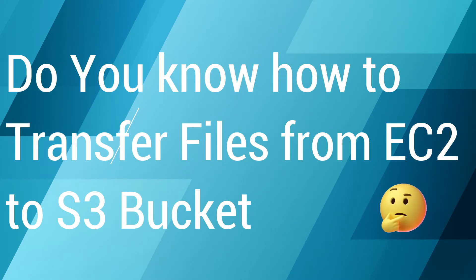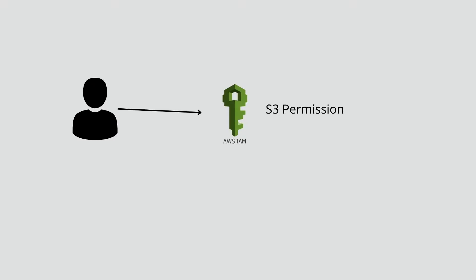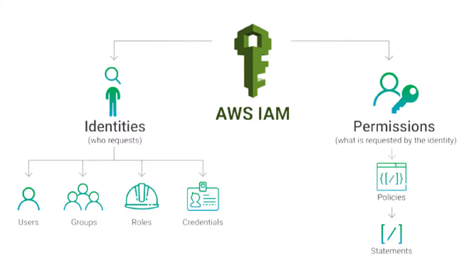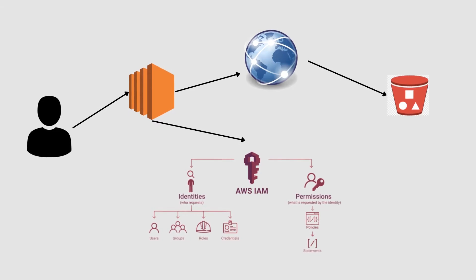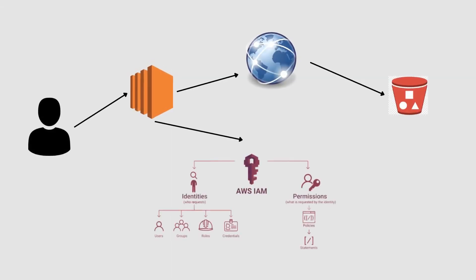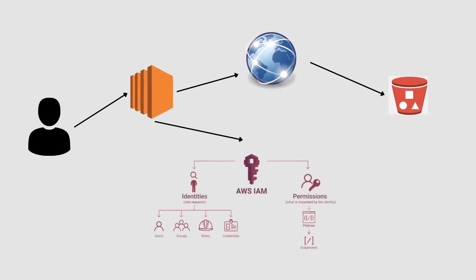For this video, the things we require: first, we need an EC2 machine, so we are going to learn how to create an EC2 machine. The next thing we require is an IAM user, and that IAM user needs access to the S3 bucket. We are also going to see how to create an IAM user with S3 permission. The last thing is that the machine I'm going to create should be connected to the internet — internet connectivity is important.